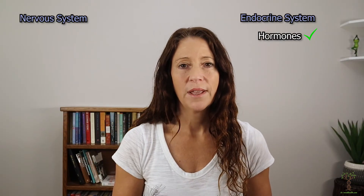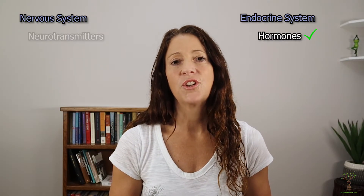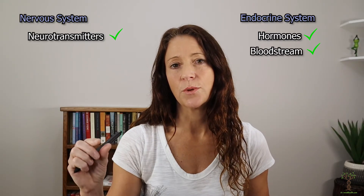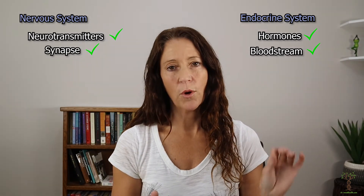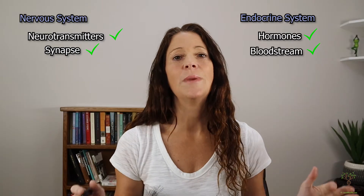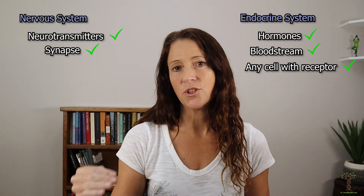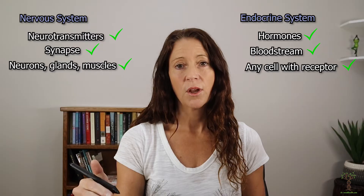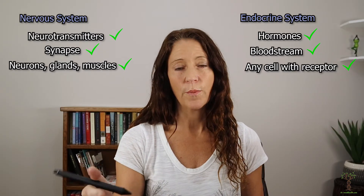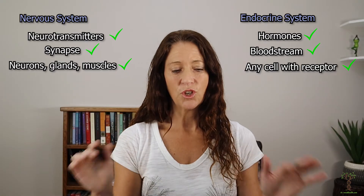I want to compare the endocrine system's communication with the nervous system. In the endocrine system, the signaling molecule is a hormone; in the nervous system it's a neurotransmitter. Hormones are released from a gland into the bloodstream, and neurotransmitters are released from neurons into a synapse. Both are specific — a hormone binds to a very specific receptor, but the target cell can be any cell in the whole body, whereas neurotransmitters can only bind to other neurons, glands like the adrenal gland, or muscles.